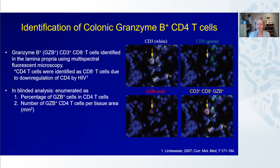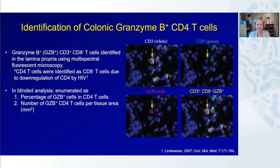To identify colonic granzyme B-positive CD4 T cells in the lamina propria, we used multispectral fluorescent microscopy, looking for granzyme B expression in CD3-positive, CD8-minus cells, with granzyme B expression shown in red. We used this approach because HIV-infected cells downregulate CD4 expression, and we didn't want to miss those infected cells. In a blinded analysis, we enumerated the percentage of these cells both as a percentage of total CD3-positive CD8-minus cells, and as the number of cells per tissue area.